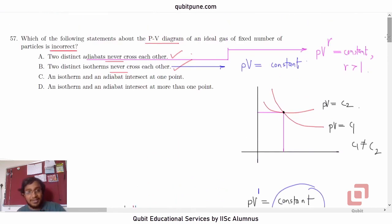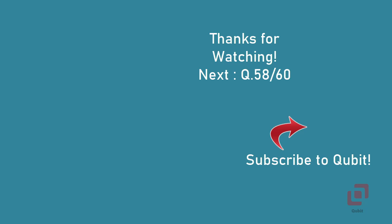So, the incorrect statement is D: an isotherm and an adiabate intersect at more than one point. So, 57th option D. If you already knew the correctness of the first three options, you could have marked option D in seconds. That is 57th. In our next video, we will be solving question number 58.